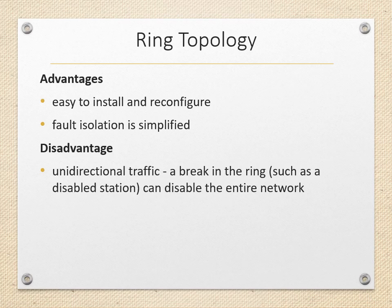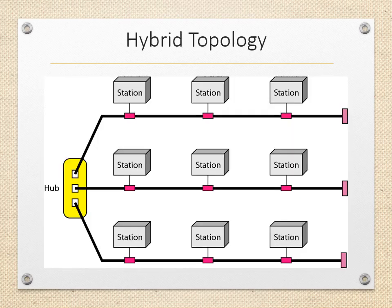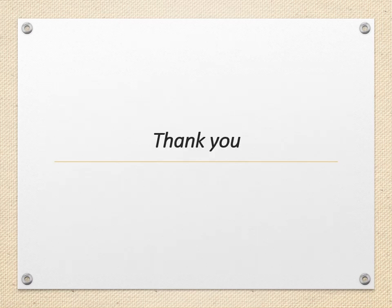A disadvantage of ring topology is unidirectional traffic — a break in the ring can disable the entire network. This can be solved by using a dual ring or a switch capable of closing off the break. Hybrid topology combines two or more network topologies. In this diagram, you can see a combination of star topology and bus topology — a main star topology with each branch connecting several nodes in a bus topology. In this session, we have seen what is a network, what are the criteria of the network, and what are the various physical structures of the network.